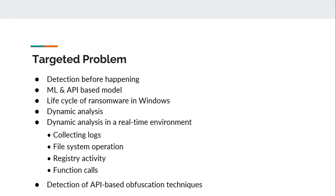The best way to protect from ransomware is to prevent it from happening in the first place. This work addresses developing an ML-based model for ransomware detection using APIs, and we will also study the attack life cycle for the Windows platform. Static analysis is time-consuming and requires manual effort, so our model will be based on dynamic analysis to detect ransomware in a real-time environment, involving log collection, file system operations, Windows registry activity, and function call monitoring. Some ransomware uses API-based obfuscation techniques to avoid detection, which will also be addressed in this work.